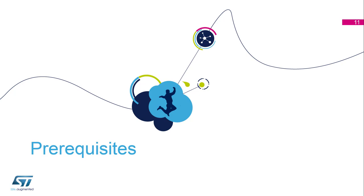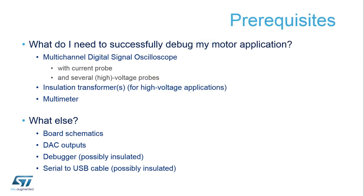In the next chapter we will speak about hardware prerequisites for proper application debugging and tuning. From the hardware point of view, it's usually an oscilloscope with multi-channel input. It's useful to have a current probe and some voltage probes. For high-voltage applications, it's mandatory to use an isolation transformer or isolated power source. Sometimes it's good to use a multimeter or LCR meter.